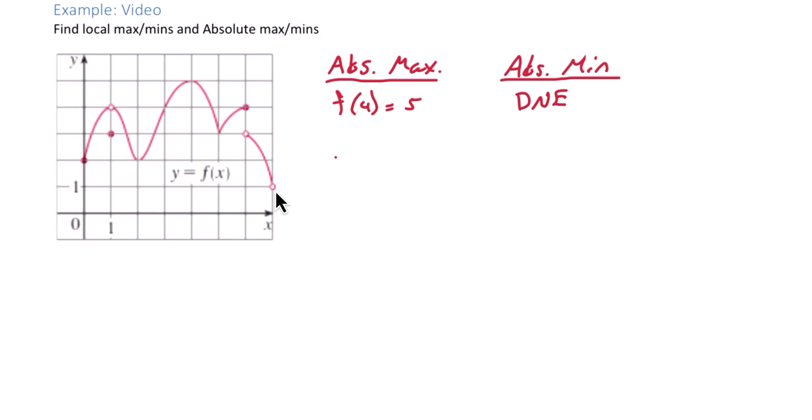Next we can look for local max and mins. Local maxes, we're going to look for peaks in the graph. So our first peak in the graph is here. We have a hill here, but notice that that is an open circle, we cannot include it. The next hill in the graph we have is here. That's the same as the absolute max. We can still call it a local max because locally or relative to the region around an x value of 4, there is a peak in the graph at 5.